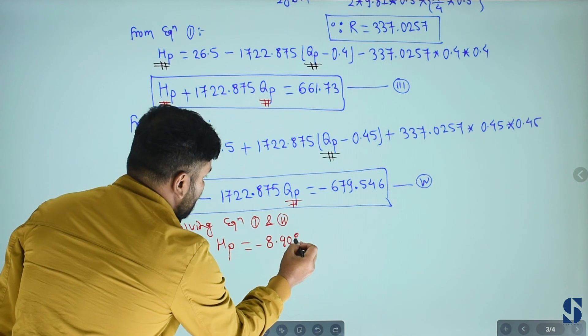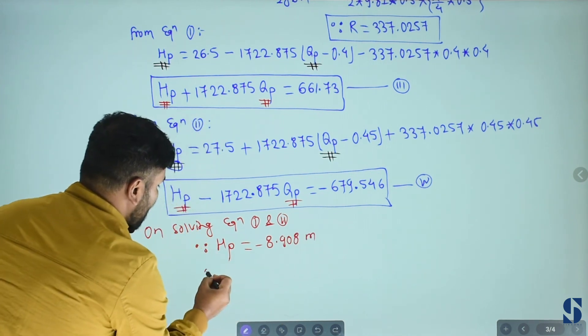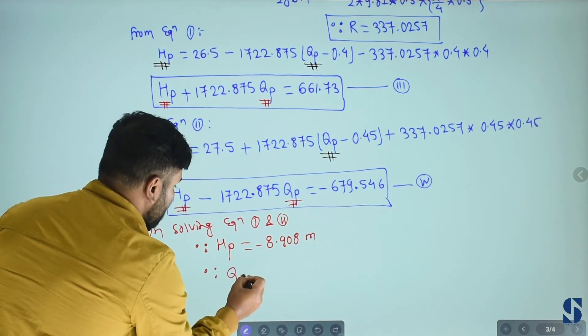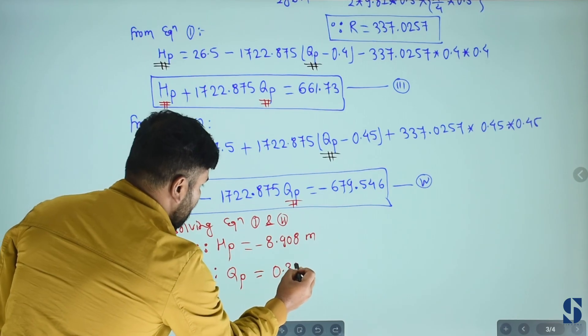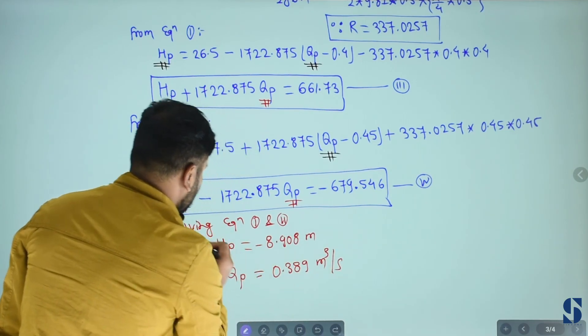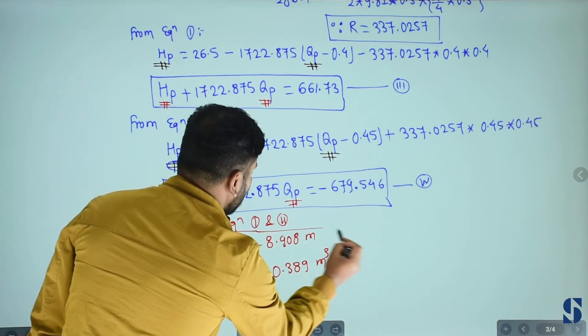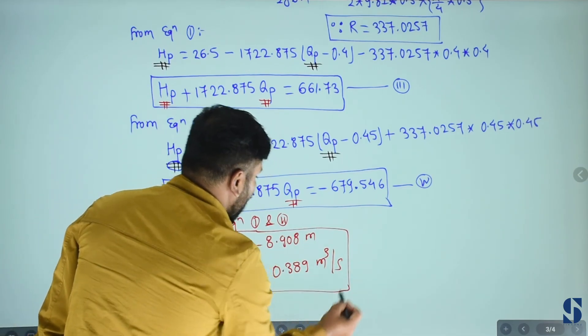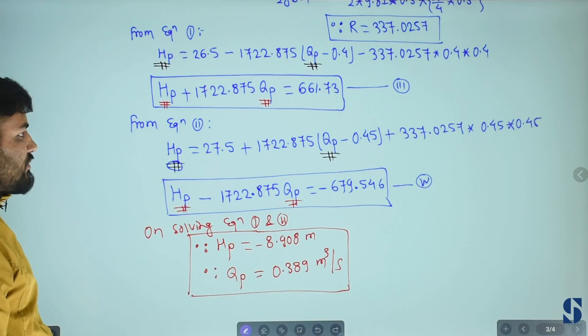HP equals minus 8.908 meter. QP equals 0.389 meter cube per second. These two values are obtained.